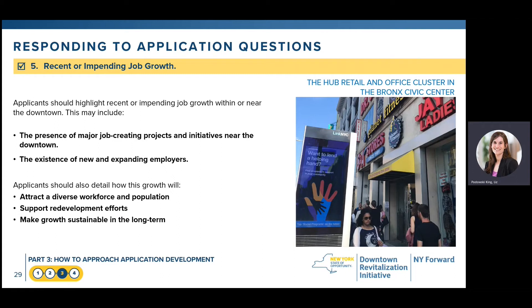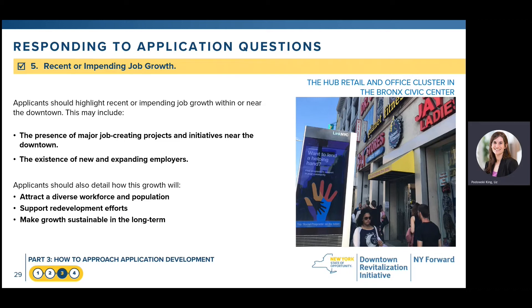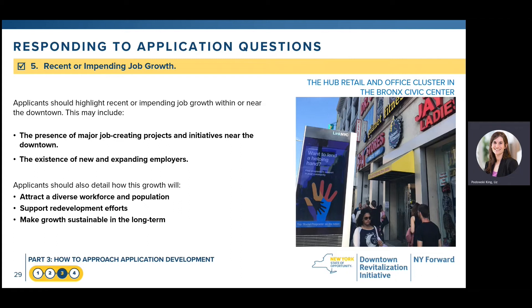Section 5 focuses on recent or impending job growth within or adjacent to the DRI and New York Forward areas. Applicants should highlight job availability and job growth within or near the downtown. Think about any new major jobs created in the past five years or planned in the near term, and whether there are new or expanding employers coming into the community. Applicants should also detail how that job growth will attract a diverse workforce, support planned redevelopment efforts, and make growth sustainable in the long term.